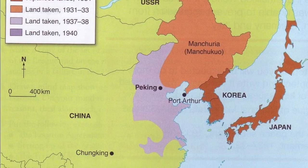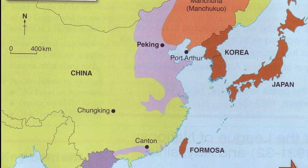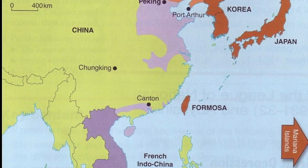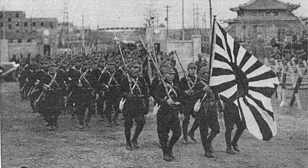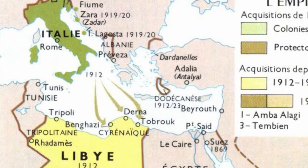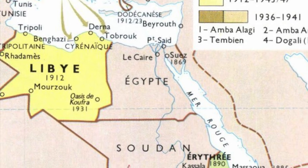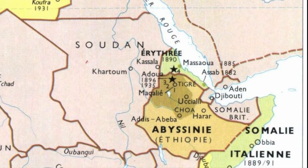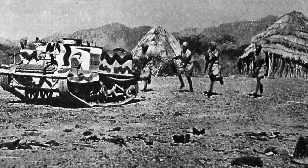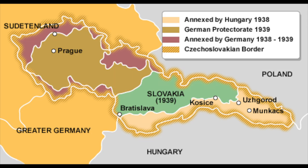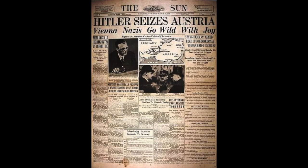Japan invaded Manchuria in 1931 and started a war against China in 1937. Italy invaded Ethiopia in 1935. In Germany, under Hitler's rule since 1933, a policy began to unify all territories with German speakers — that means parts of Czechoslovakia, parts of Poland, and the entire Austria.